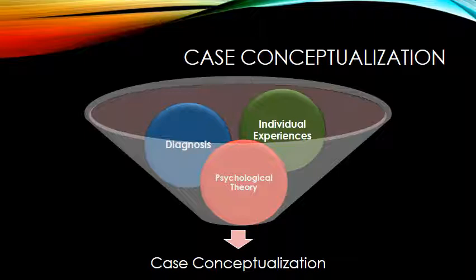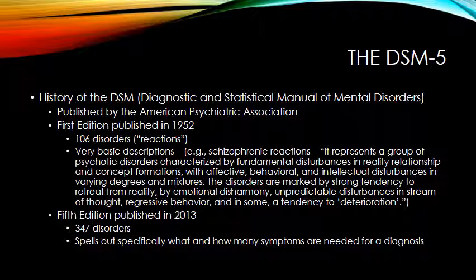The way we label disorders at the current time is by using the DSM — the Diagnostic and Statistical Manual of Mental Disorders. This is a book published by the American Psychiatric Association. Don't confuse it with the American Psychological Association; it's published by the Psychiatric Association, primarily the association for psychiatrists — a medical association rather than the association for psychologists. But in the field, psychologists use this book as well.